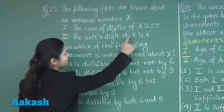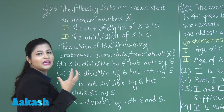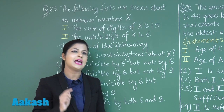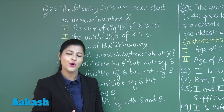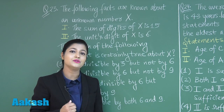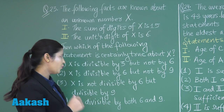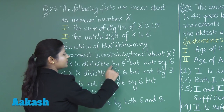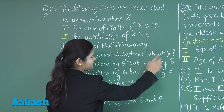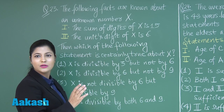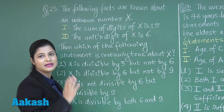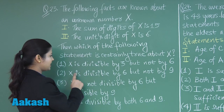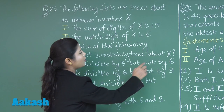The other thing is that the units digit is 6, which is an even number. This means the number is divisible by 2. If a number is divisible by both 3 and 2, then it will be divisible by 6. So x is divisible by 6.